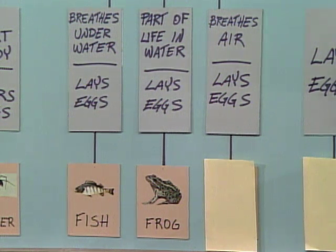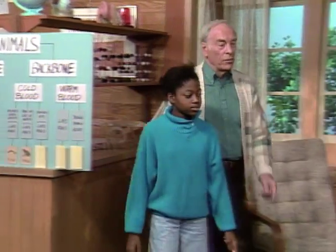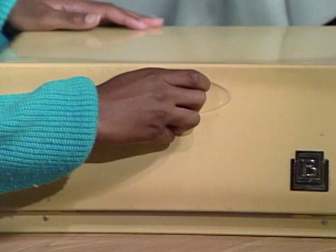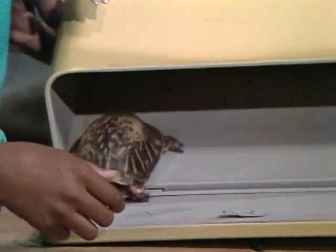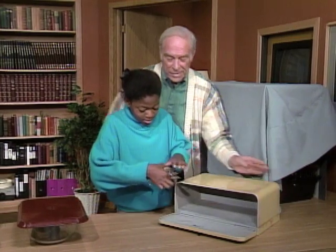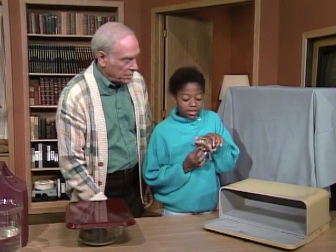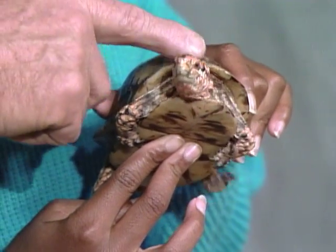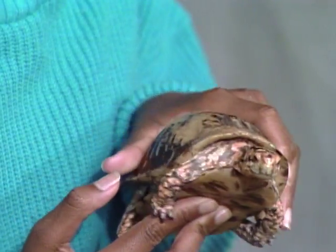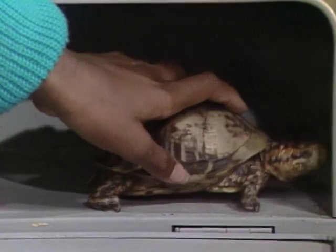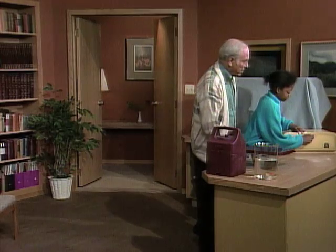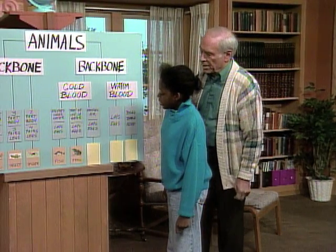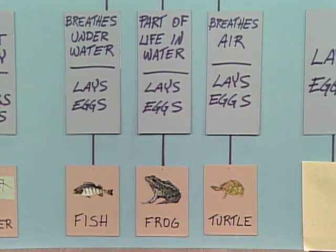Next: cold blood, breathes air, and lays eggs. And that animal is over there in the bread box. What do you think it is? Probably a turtle. Go ahead, open the bread box. Here he is. What classification of animal is this? He's a reptile. So it could have been a snake in there, right? Yeah. Snakes are interesting animals too, just like turtles. So put it back in so he won't wander around the room. Backbone, cold blood, breathes air, and lays eggs — it's a turtle. Very good.